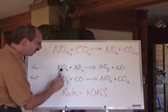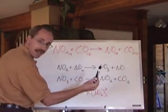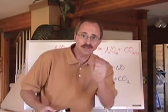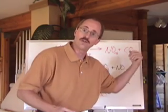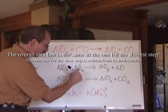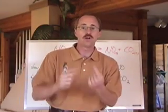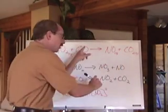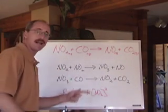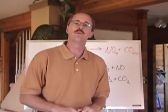Since this is the slowest step, its rate law is written as: rate equals K times NO2 squared. If that's the rate determining step, the rate determining step's rate law is the rate law for the overall reaction. The overall reaction does have that rate law — rate equals K times the concentration of NO2 squared — so this is what we call a proper reaction mechanism. Criteria one: the mechanism adds together to give the net equation. Criteria two: the rate law for the rate determining step, which we determined by looking at the reactants, matches the known rate law. So it's a viable reaction mechanism.